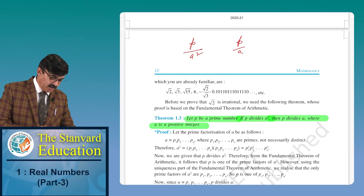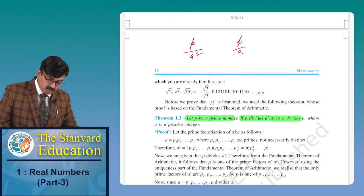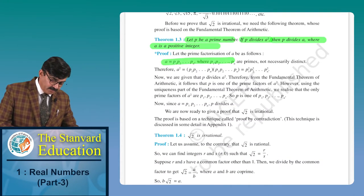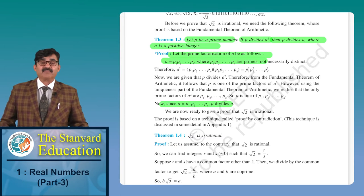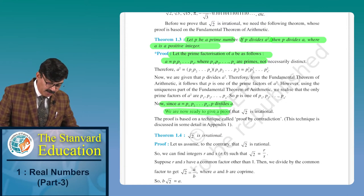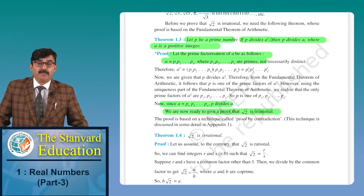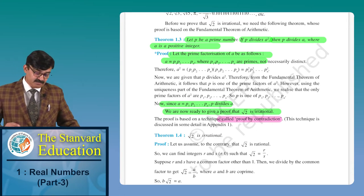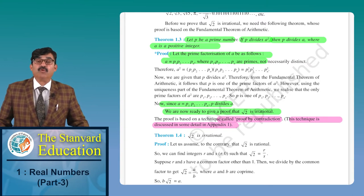That's all Theorem 1.3 says: Let p be a prime number; if p divides a², then p also divides a, where a is a positive integer. Its proof is not usually asked in the exam. Now we are going to prove that root 2 is irrational using a technique called proof by contradiction — called 'virodhaabhaas' in Hindi. This technique is discussed in detail in Appendix 1.